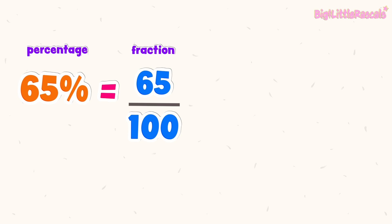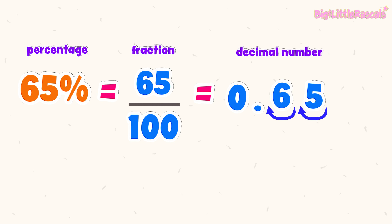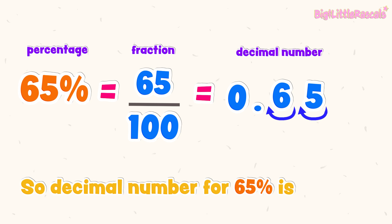Now, converting to decimal number: 65 out of 100 — let's put the top number 65 first. Because we have two zeros at the bottom, we need to jump two times to the left: one, two. Then put the decimal point after that, and as this is less than one whole, we put zero at the front. So the decimal number for 65% is 0.65.